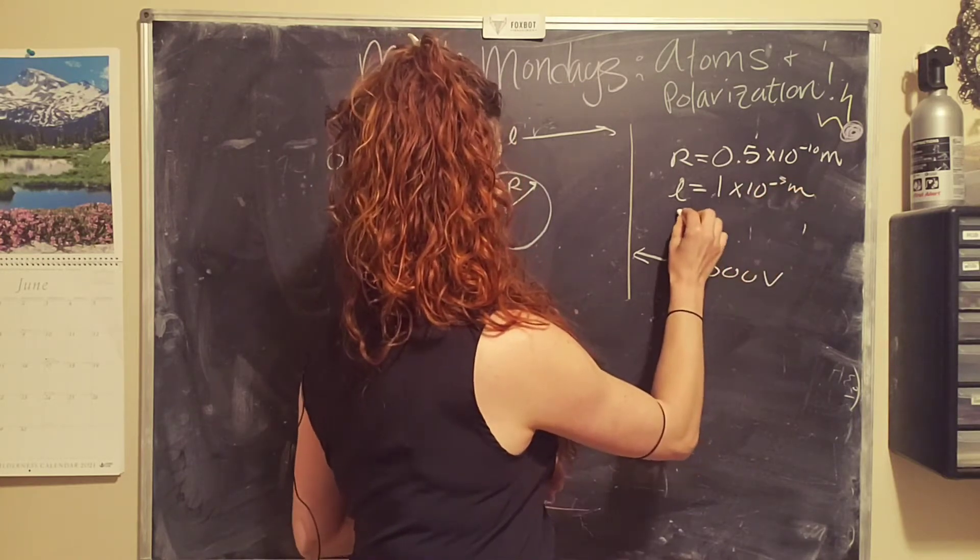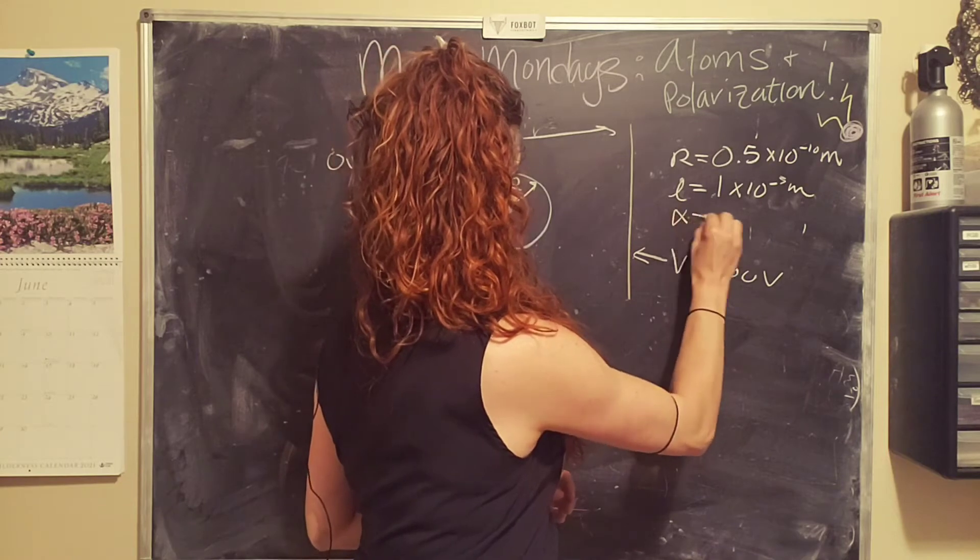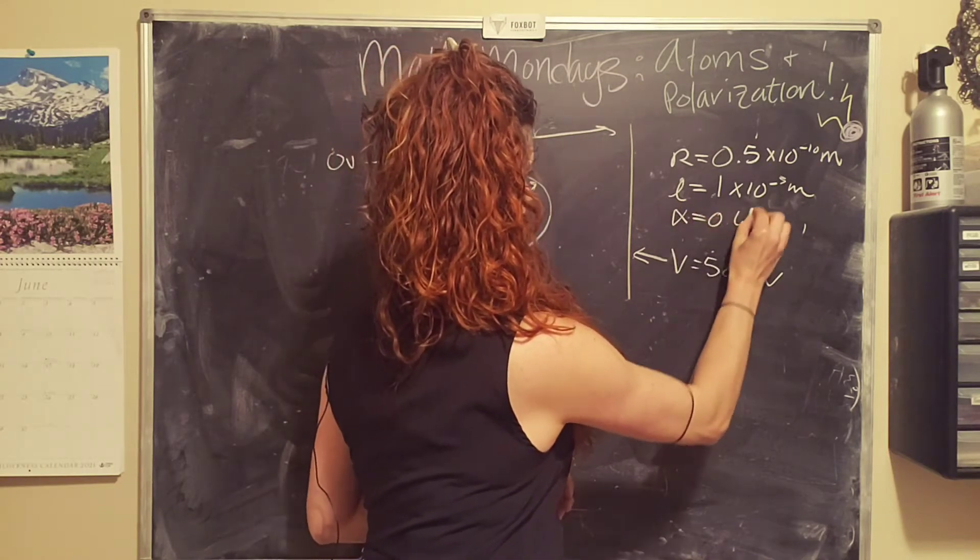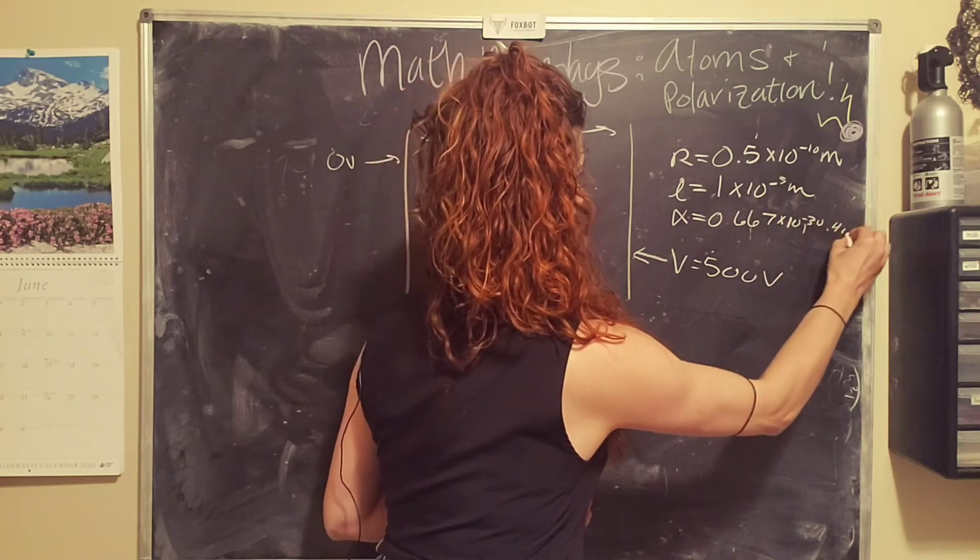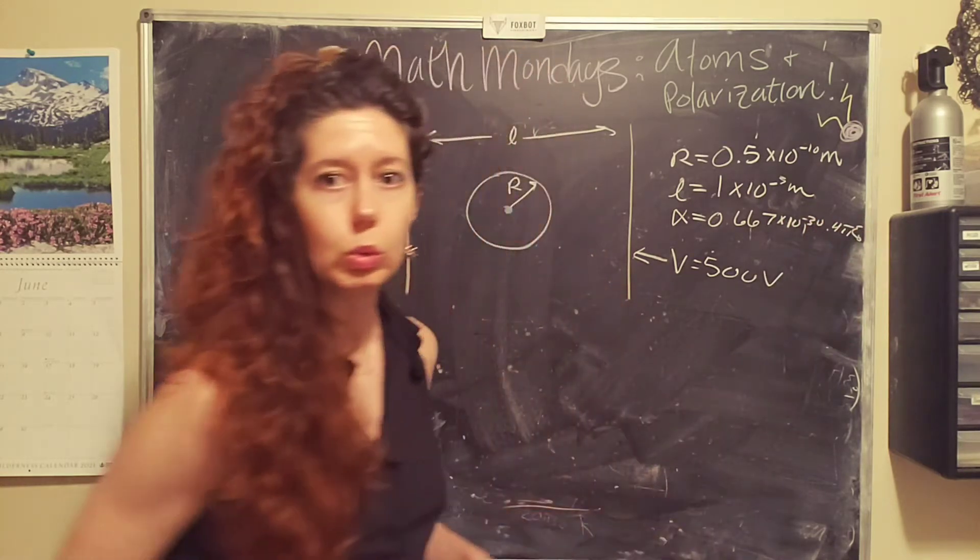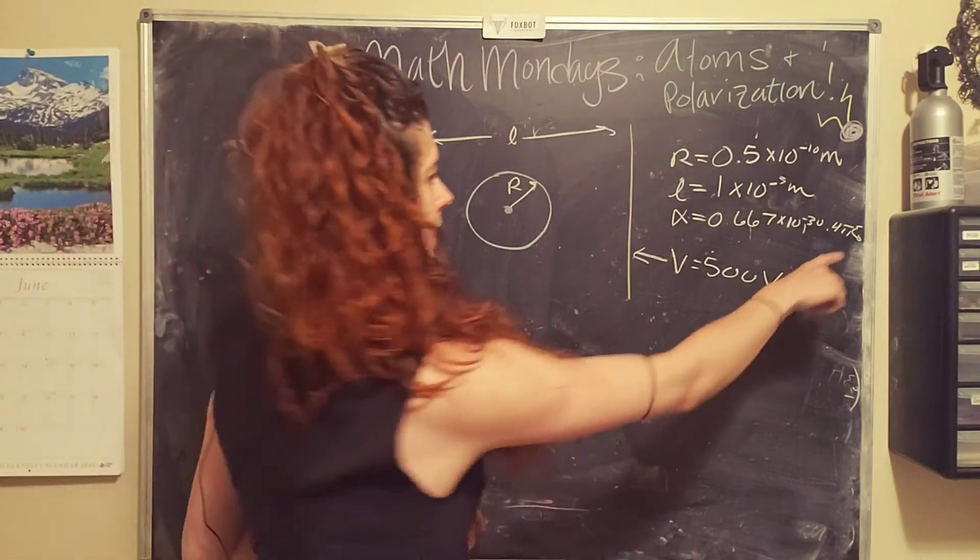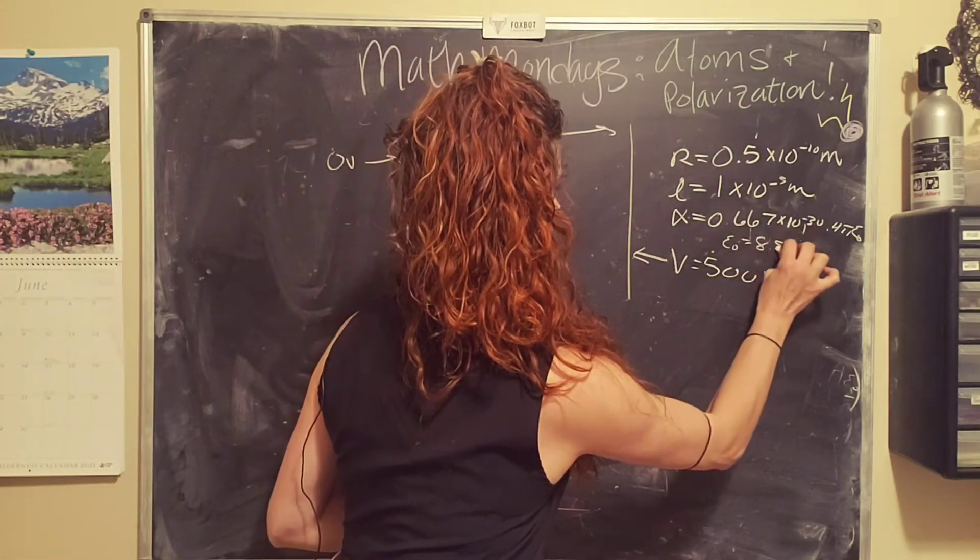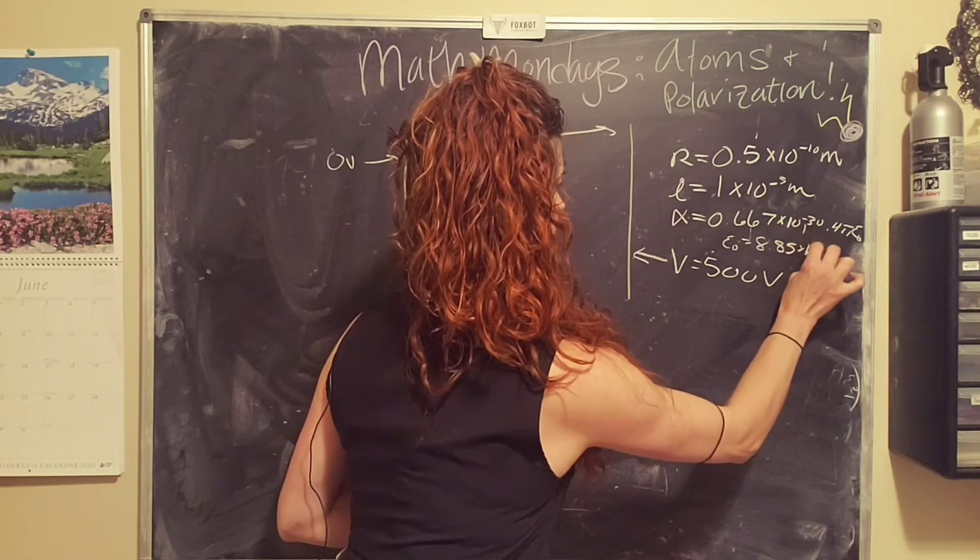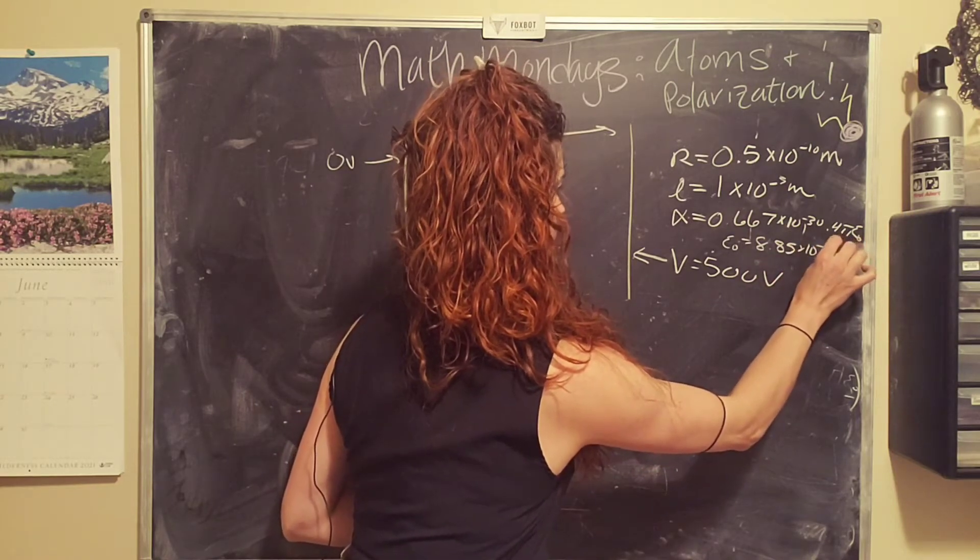And then we know that the separation distance l is 1 millimeter or 1 times 10 to the negative third meters. And we are also given that alpha equals 0.667 times 10 to the negative 30th times 4 pi epsilon naught. And epsilon naught equals 8.85 times 10 to the negative 12 coulomb squared divided by newton meters squared.